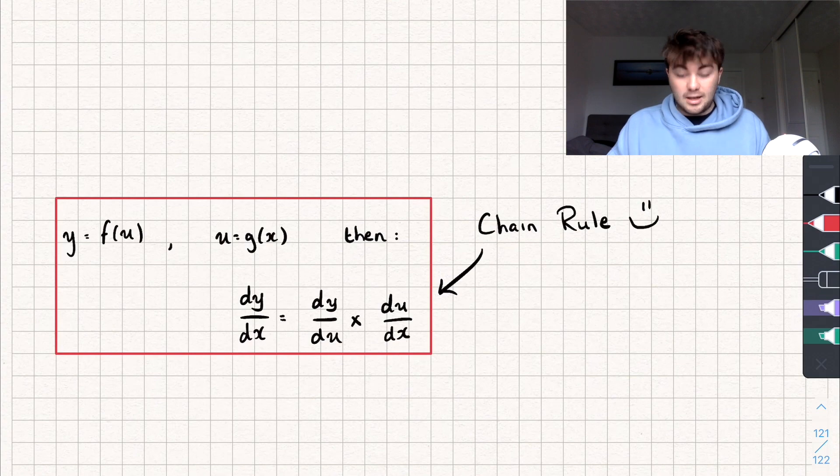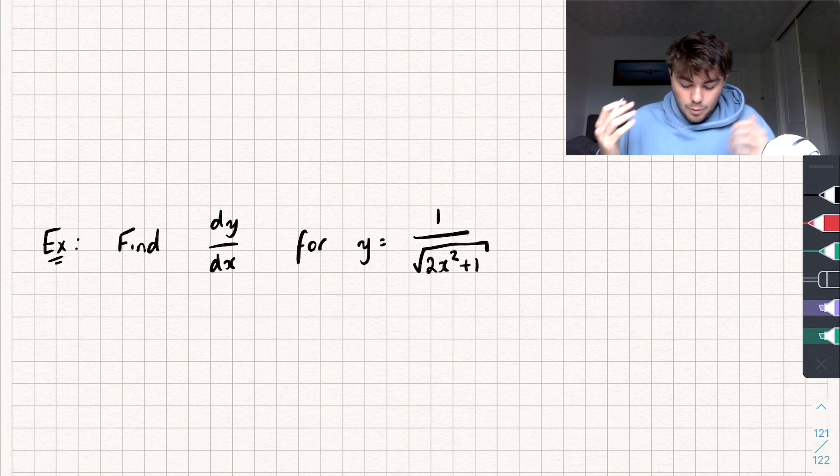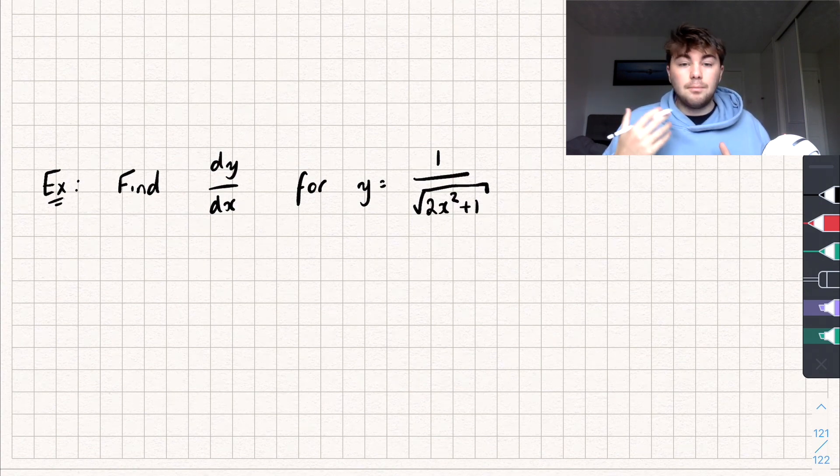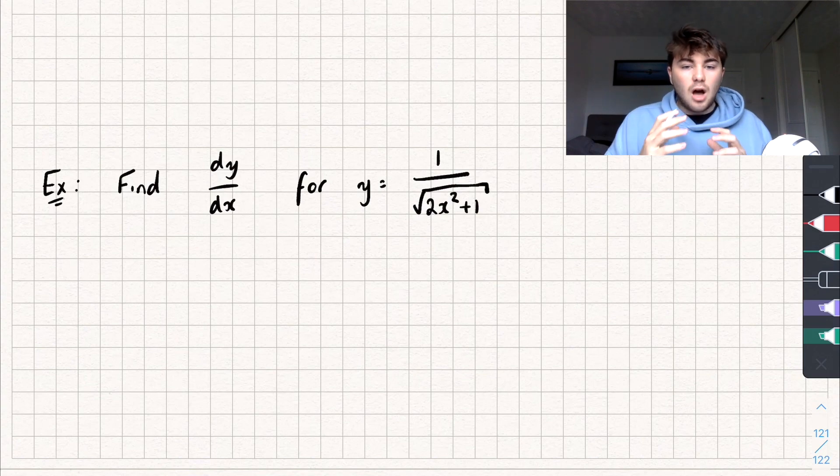But let's look at it as an example, because that will help us make more sense of it. So, we will need to find the derivative for y equals 1 over the square root of 2x squared plus 1. Now, I think the hardest part about doing the chain rule is spotting the substitution that we're going to have for u.